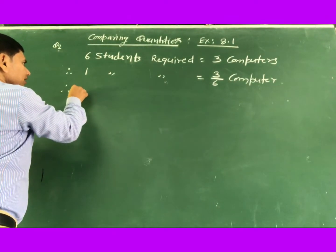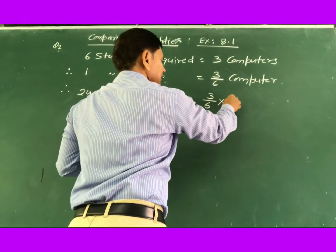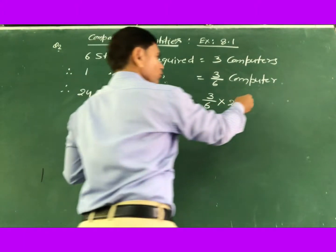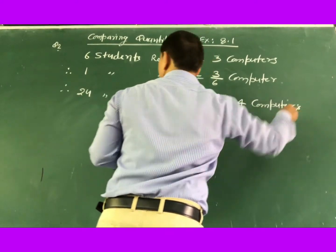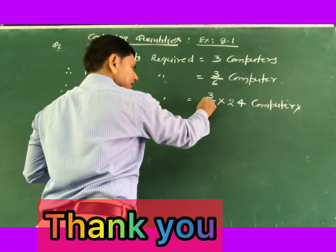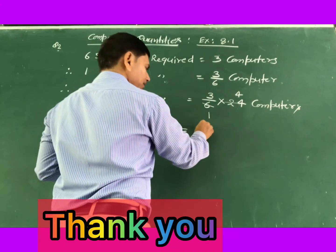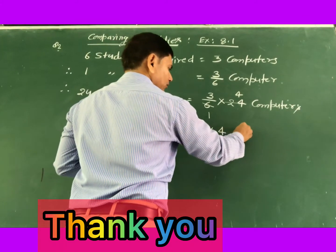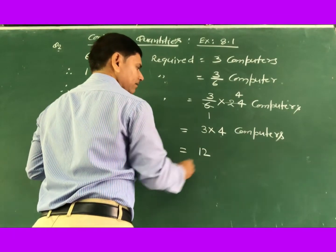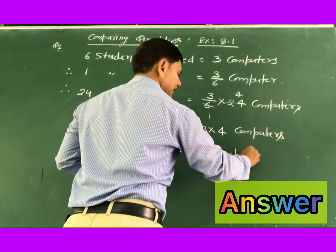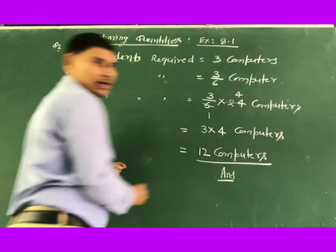After that, for 24 students, this 24 comes here, just into the multiplication. So you will get the number of computers needed for 24 students. Now simplify it: 6×1 is 6 and 6×4 is 24, remaining is 3 times 4. The multiplication of 3 and 4 is 12. So 12 computers are required for 24 students. This is the answer to this question.